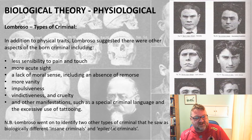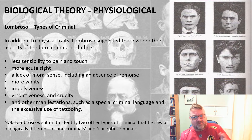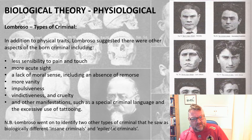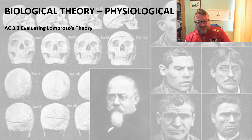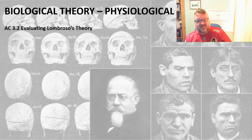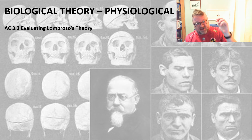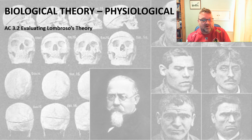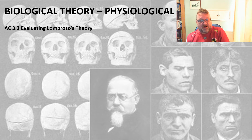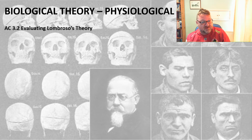Lombroso also identified two other types of criminal he saw as biologically different — insane criminals and epileptic criminals — though for A-level purposes, focus on the main types. Now, one thing you will definitely have to do in the exam is evaluate strengths and weaknesses. If you see the word 'evaluate,' the examiner does not want a description of the theory — just strengths and weaknesses. Likewise, a 'describe' question just wants the theory, not the evaluation.